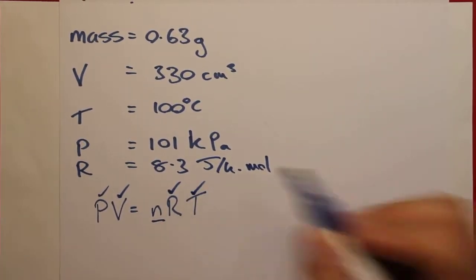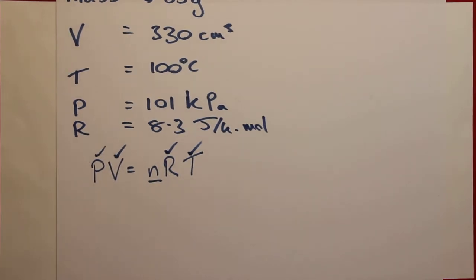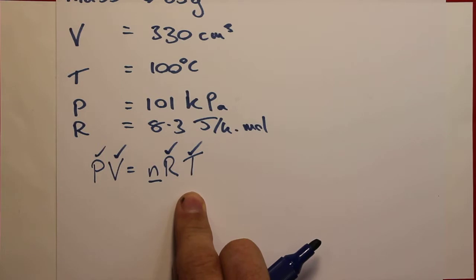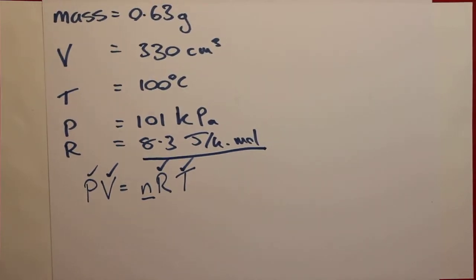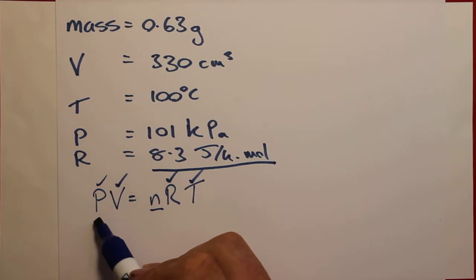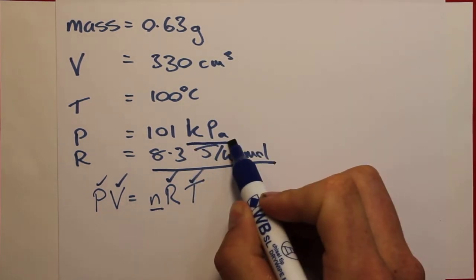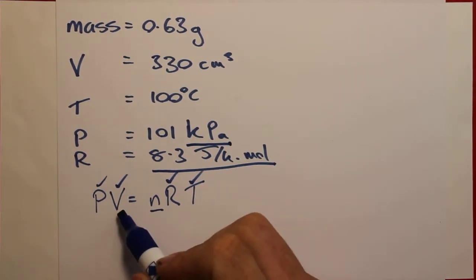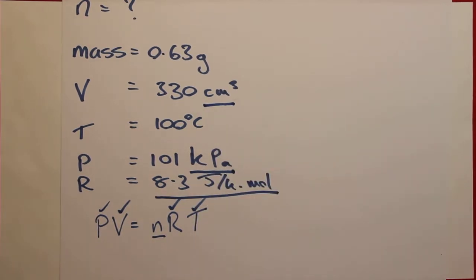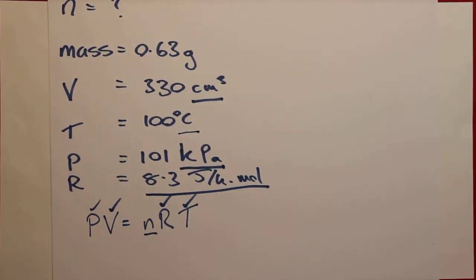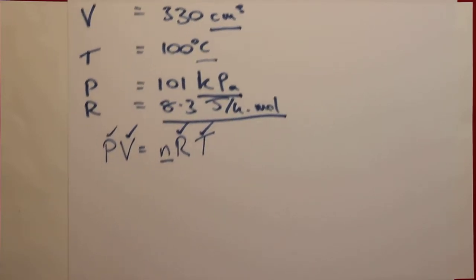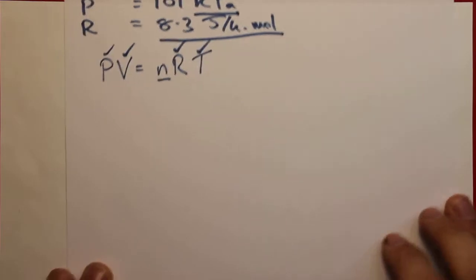Before we can use this equation, we need to address the units. To use this value of R, we need very particular units. Pressure must be in pascals — but we have kilopascals. Volume must be in meters cubed — but our volume is in centimeters cubed. Temperature must be in kelvin — but our temperature is in degrees Celsius. So we need to convert all of these units.